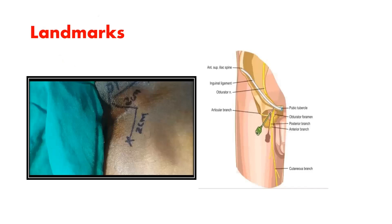The main landmark is the pubic tubercle. With the patient in supine position, the pubic tubercle is identified by palpation, and the point of needle entry is located 2 cm lateral and 2 cm caudal to it.